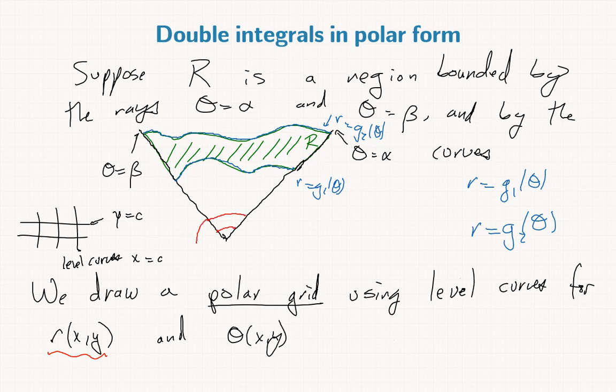If we drew for the entire plane they would be circles. We only really care about this segment, this pi slice. So we slice up our region into places that have the same radius, and then level curves for theta will be rays.